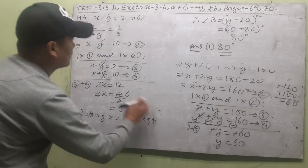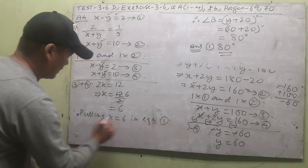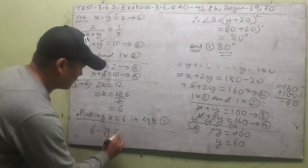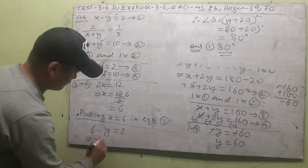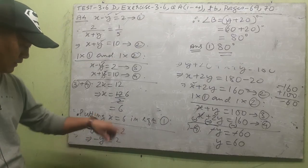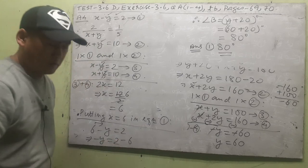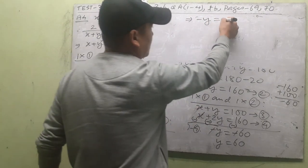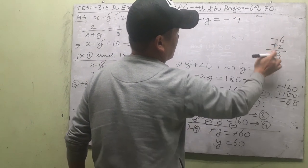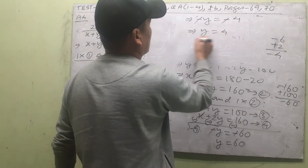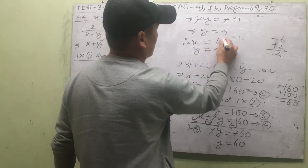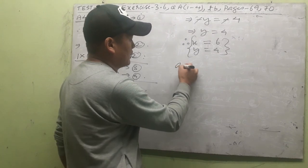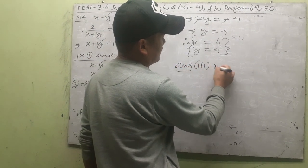Substituting x = 6 into equation 1: 6 − y = 2 → −y = 2 − 6 = −4 → y = 4. Therefore x = 6 and y = 4. Checking the answer choices, choice number 3 matches: x = 6, y = 4.